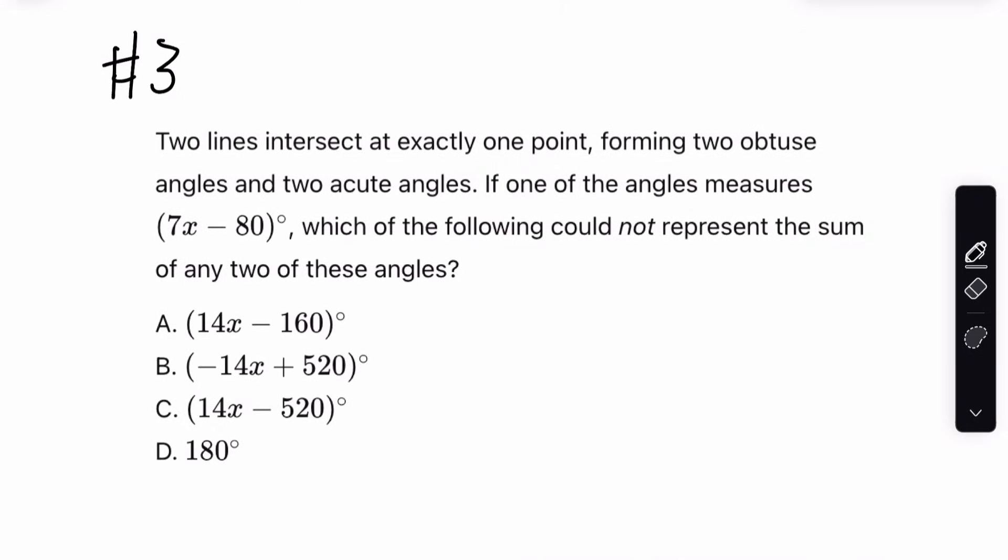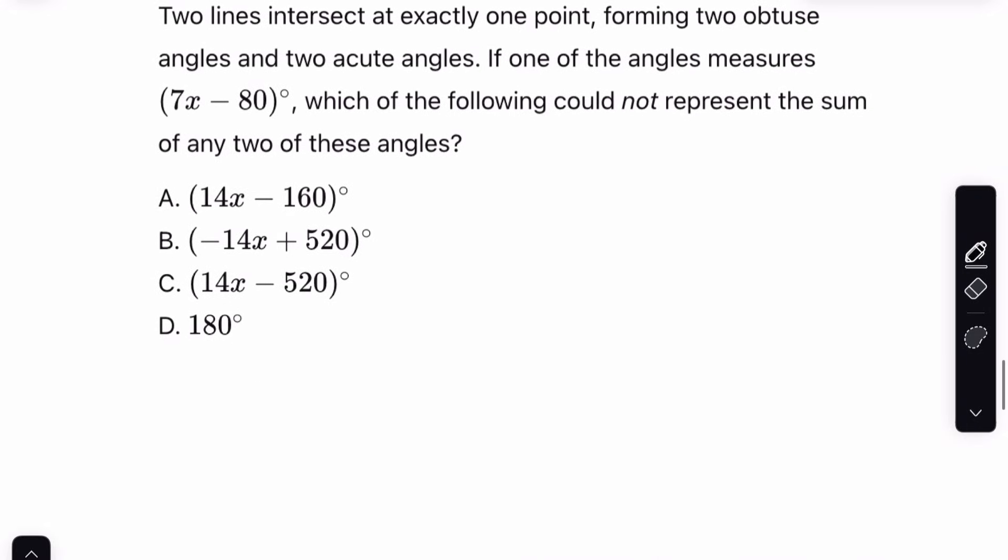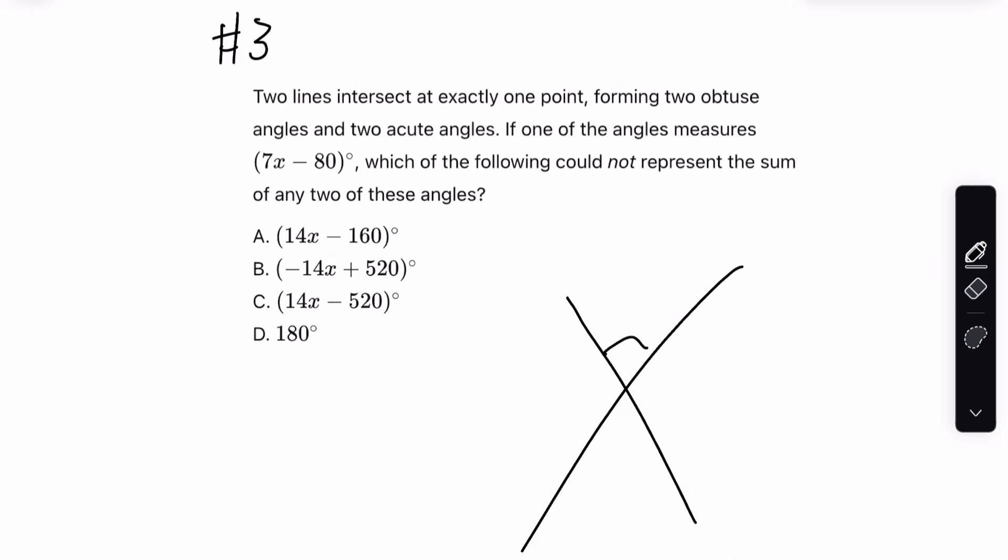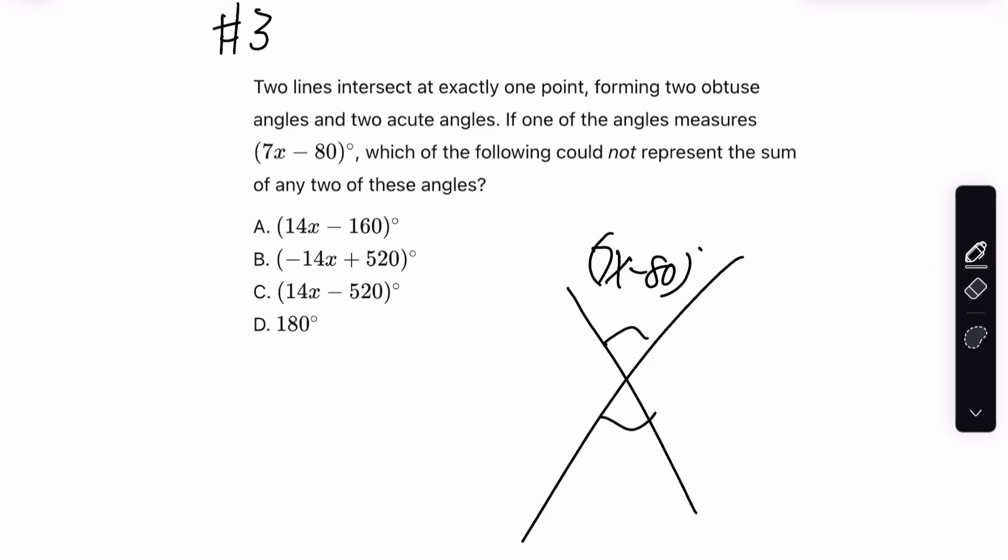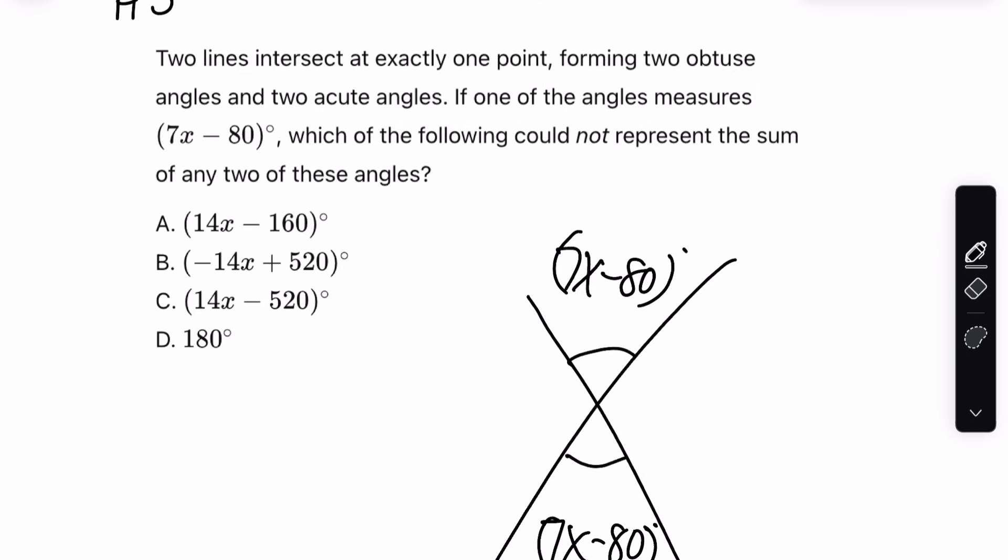Two lines intersect at exactly one point, forming two obtuse angles and two acute angles. If one of the angle measures is 7x minus 80 degrees, which of the following could not represent the sum of any two of these angles. Let's make this 7x minus 80. It doesn't really matter which one it is. First of all, guys, for the love of God, draw your diagrams. Do not try to do this in your head. This angle would also be 7x minus 80, right?